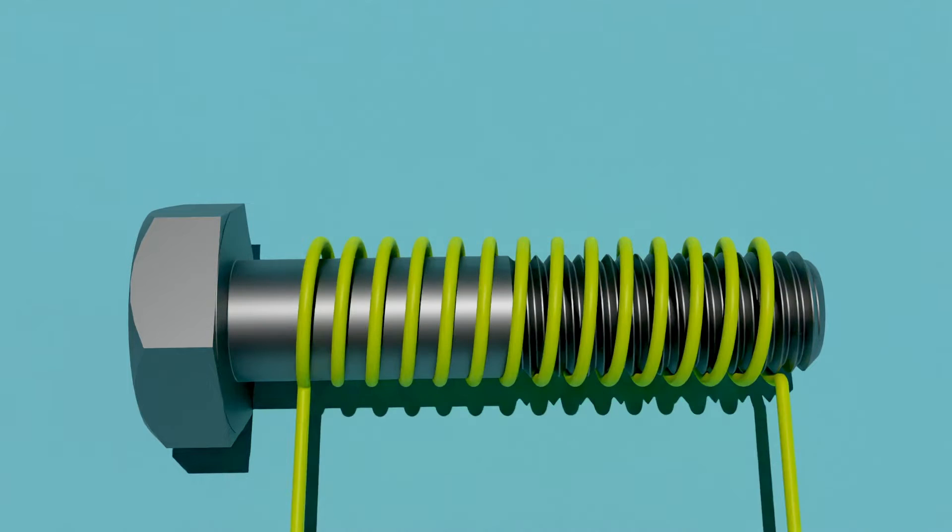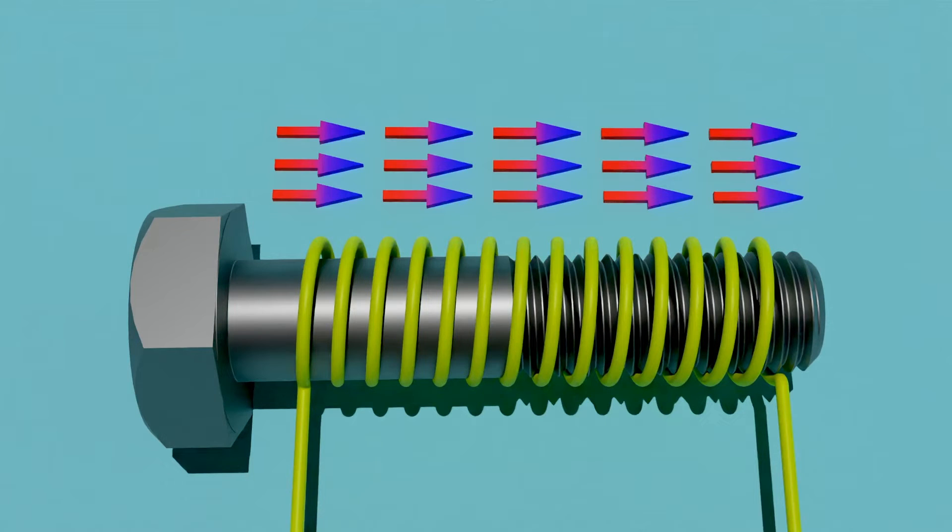When we wrap this bolt with a conductive coil and pass an electricity current through it, its magnetic domains become organized in a similar direction and act as a magnet. This type of magnet is called an electromagnet. We can control this magnet by turning it on or off, increasing or decreasing the strength of the magnet.